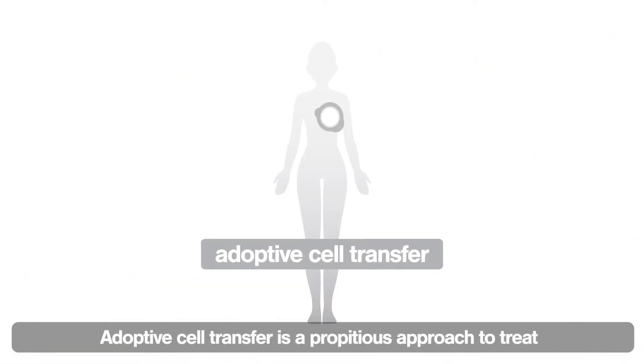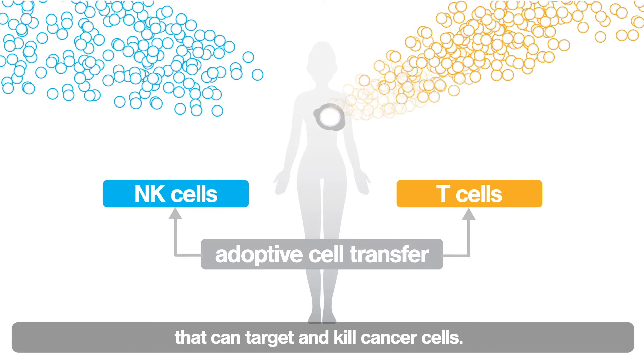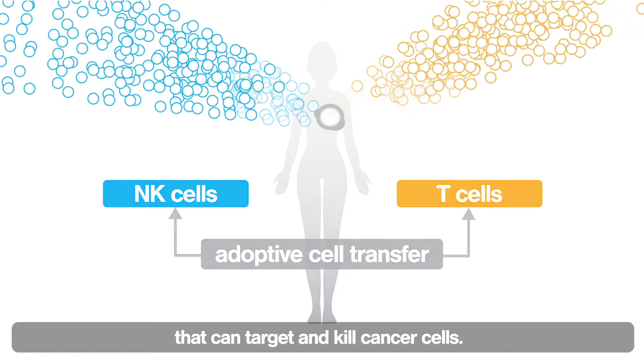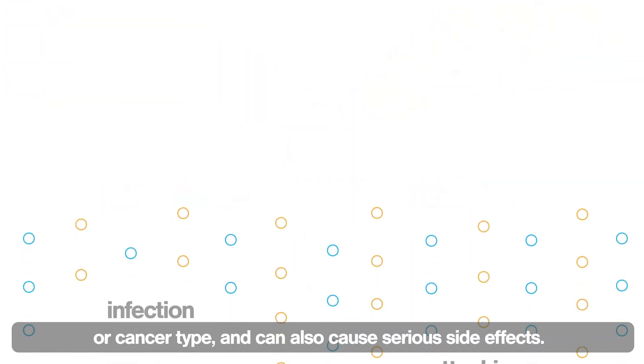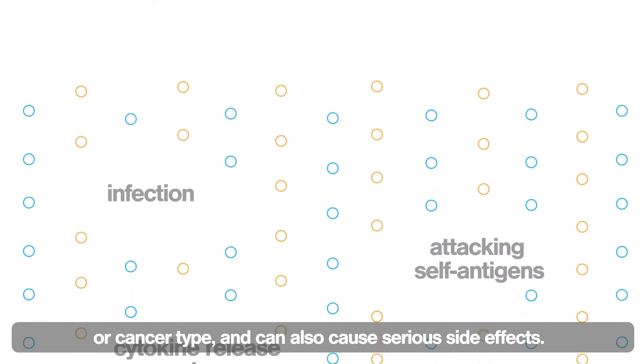Adoptive cell transfer is a propitious approach to treat different types of cancers by using T cells or NK cells that can target and kill cancer cells. But the response can vary depending on the patient or cancer type, and can also cause serious side effects.